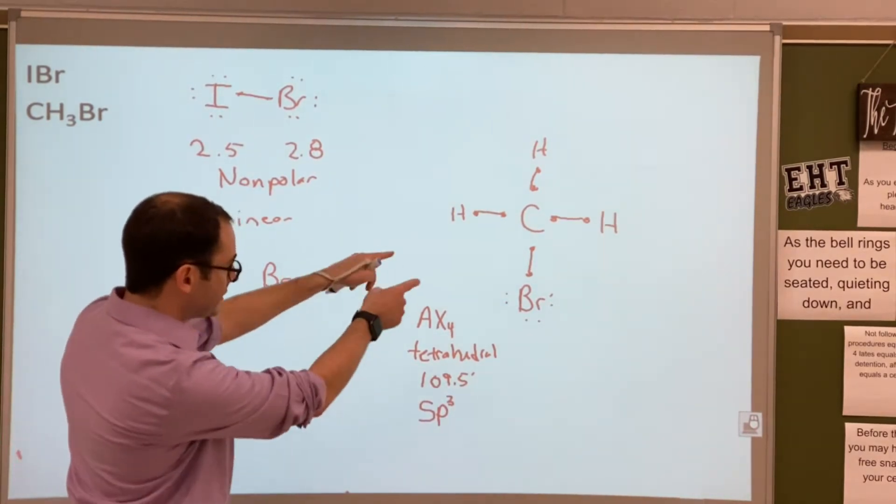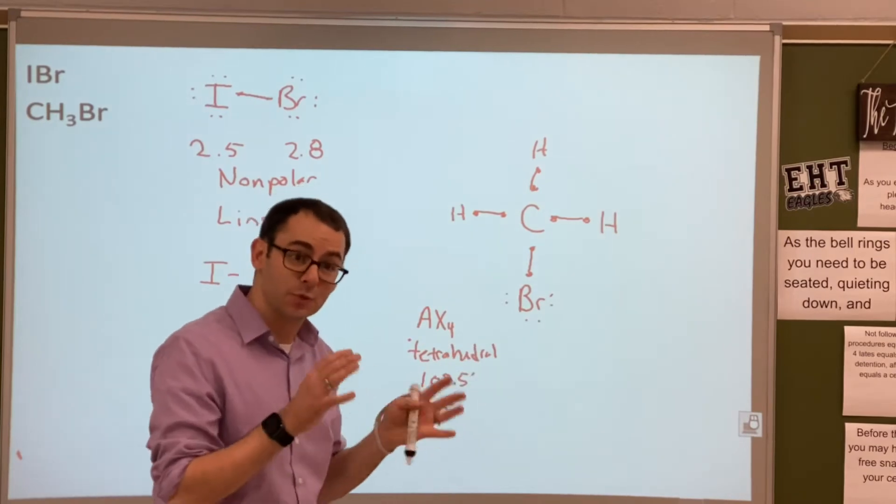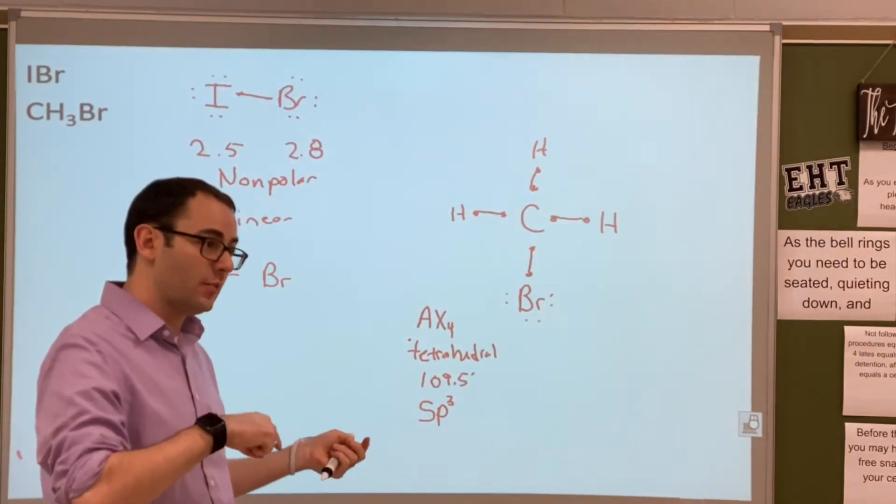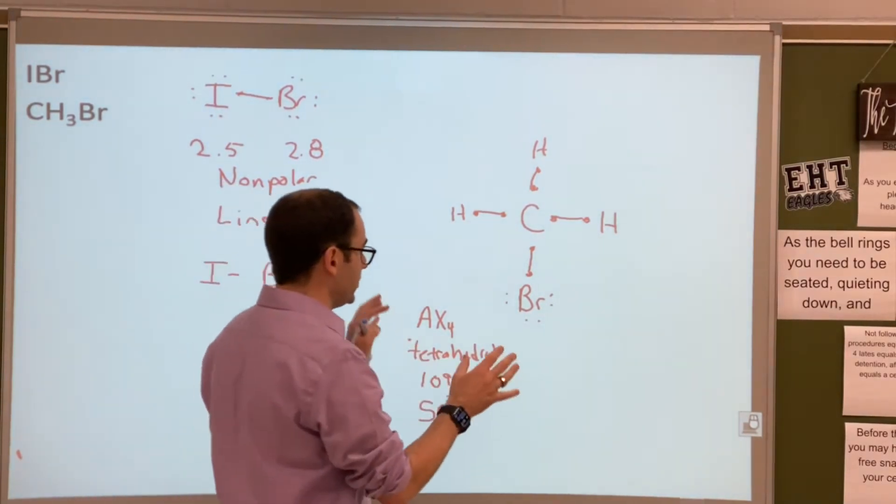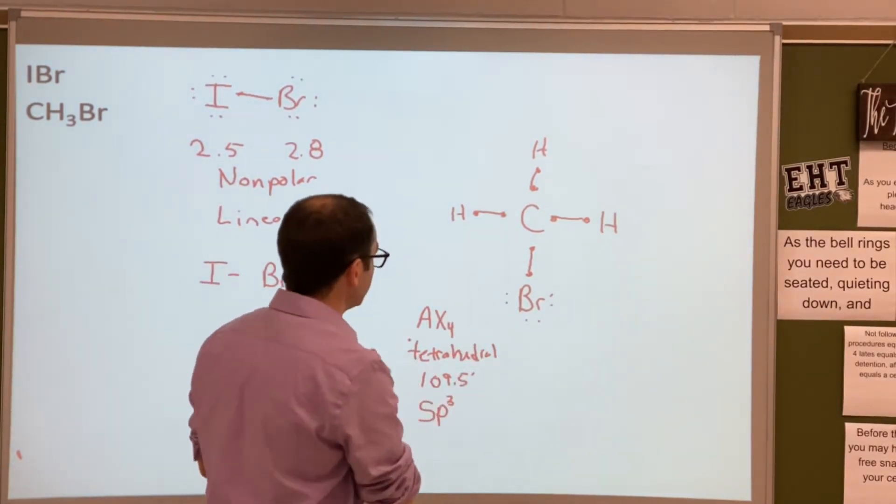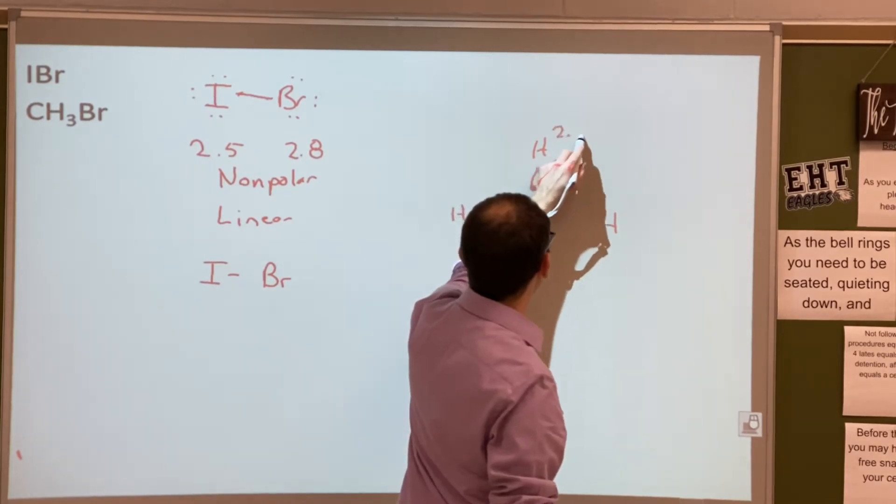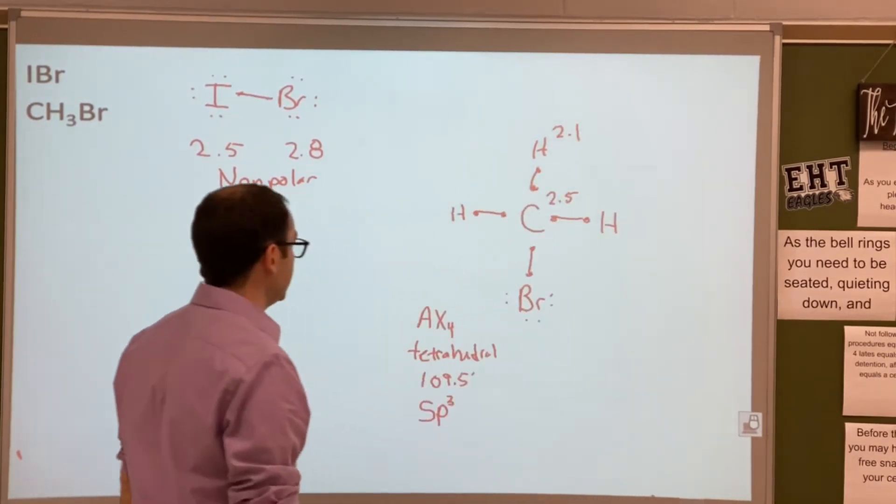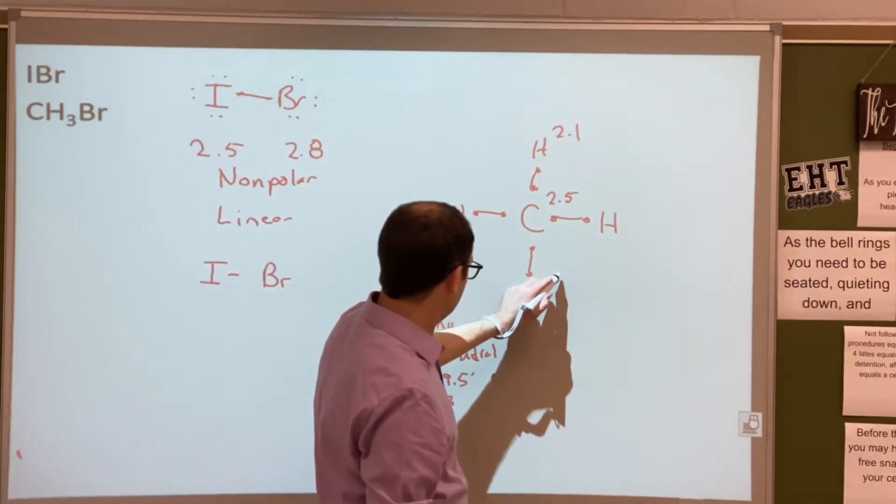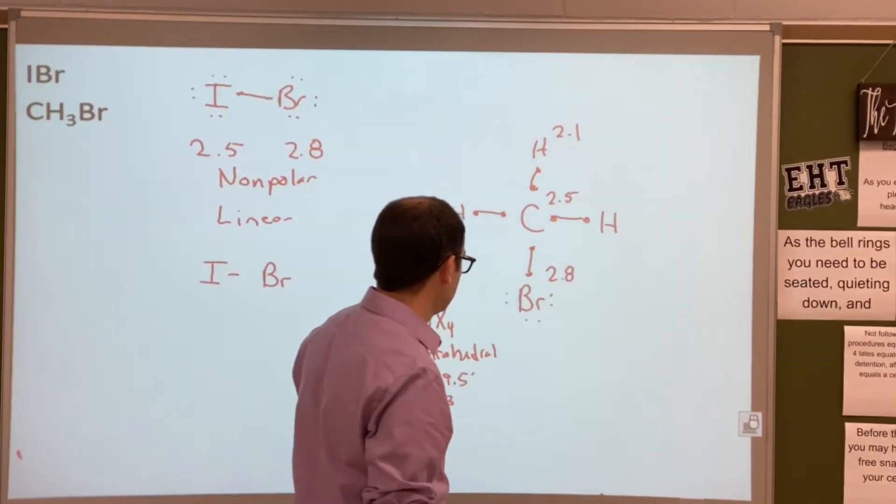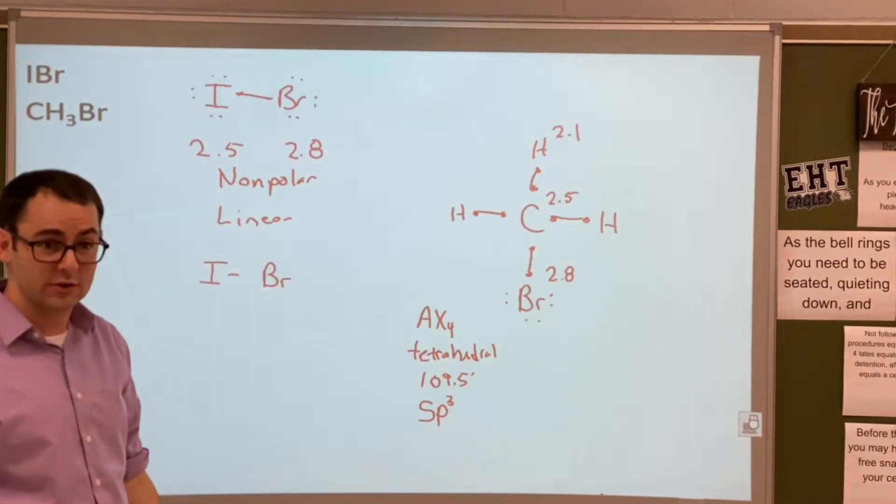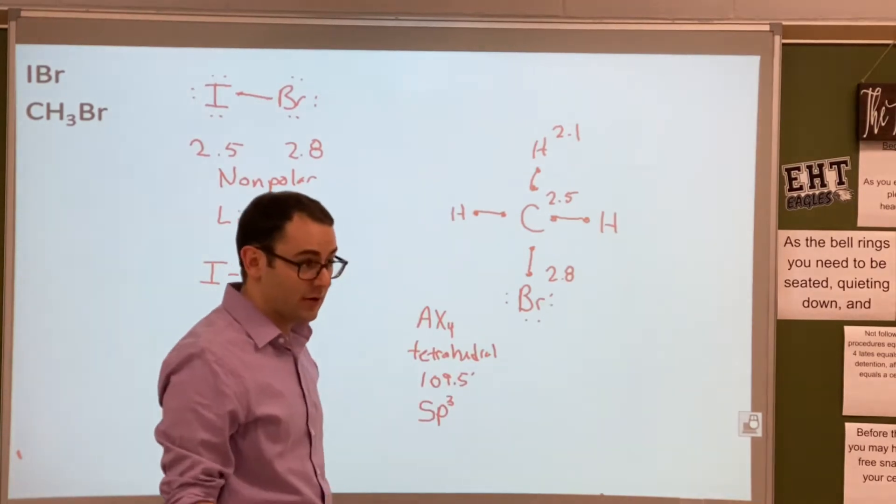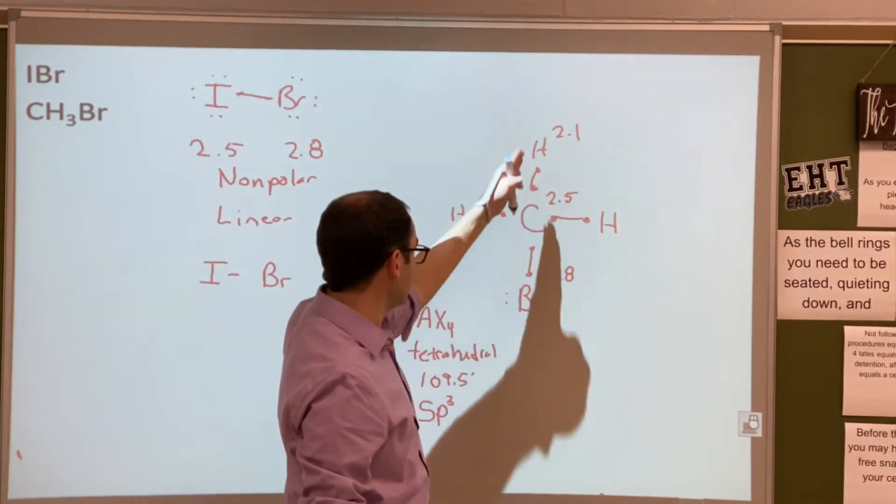Now that we have the shape, does this look like it's tetrahedral? Is it pretty good? Yeah, it's pretty good. If it wasn't pretty good, you'd have to rearrange it and then figure out polarity. Because it could affect things. So let's throw in some numbers. We have 2.1 for hydrogen, 2.5 for carbon, and then 2.8 for the bromine. And then these hydrogens, we don't even have to think about because they're going to cancel out. So this is the only part we're going to worry about.